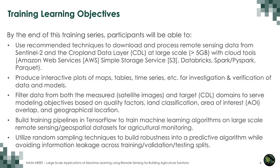By the end of this training series, participants will be able to use recommended techniques to download and process remote sensing data from Sentinel-2 and the cropland data layer at large scales with cloud tools. They will produce interactive plots, maps, tables, and time series for investigation and verification of data and models. They will also filter data from both the measured and target domains based on quality factors, land classification, area of interest overlap, and geographical location. Additionally, participants will build training-type pipelines in TensorFlow to train machine learning algorithms on large-scale remote sensing geospatial data sets for agricultural monitoring, and utilize random sampling techniques to build robustness into a predictive algorithm while avoiding information leakage across training, validation, and testing splits.